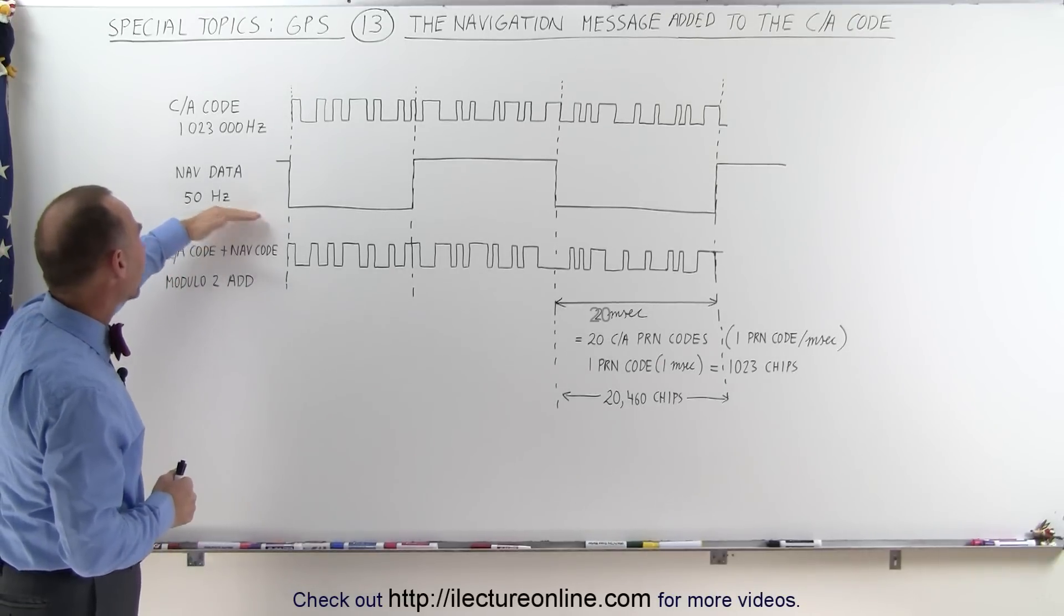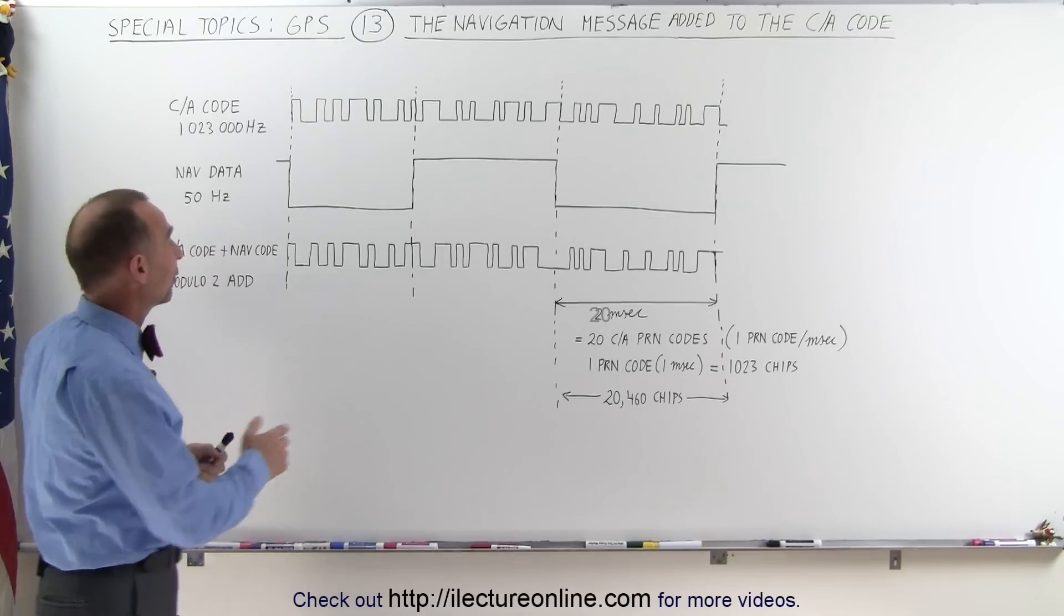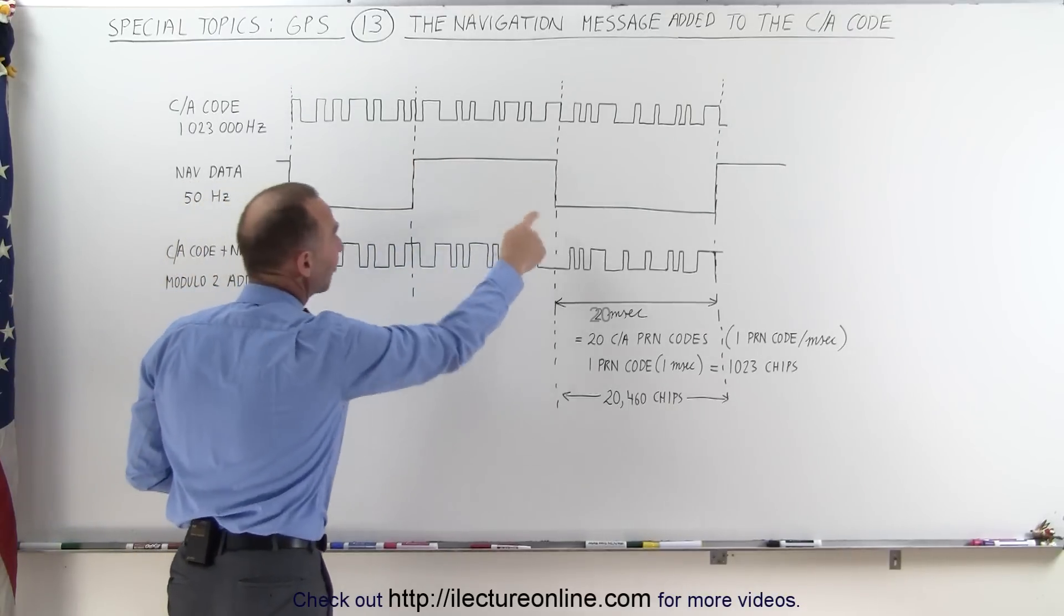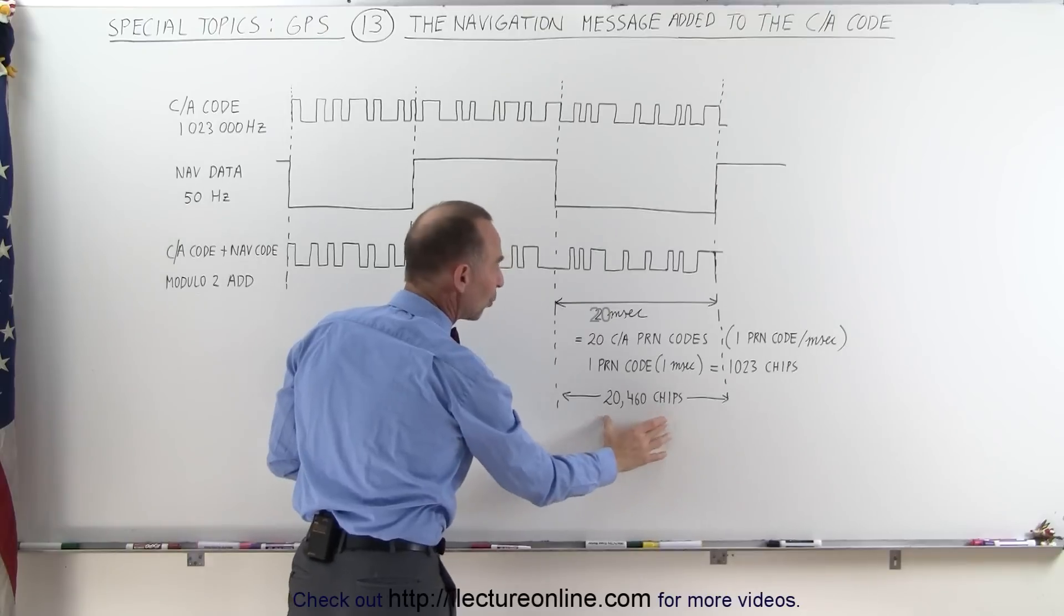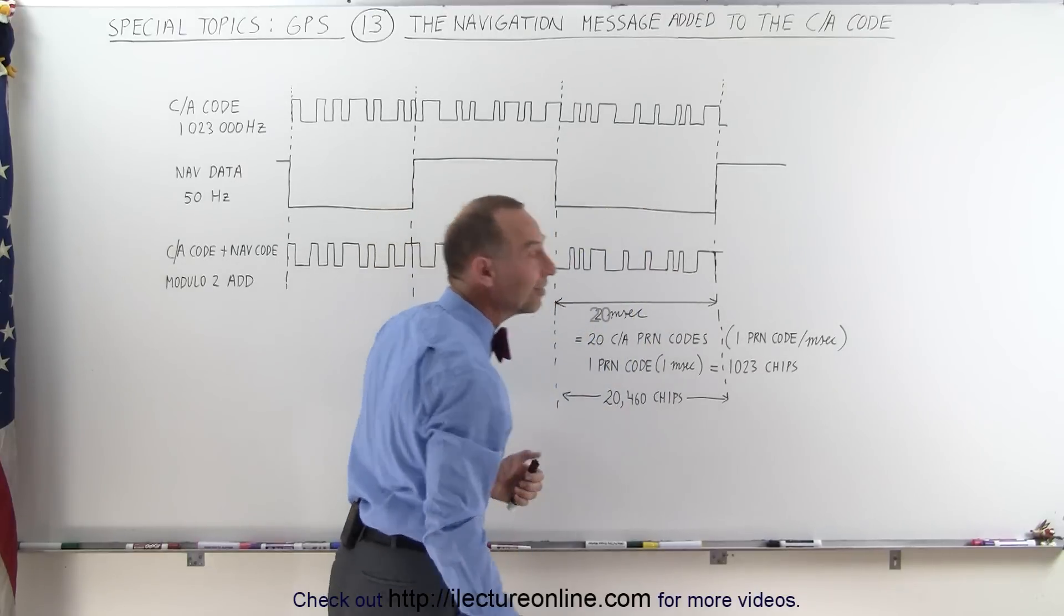We then add to that the NAV data. The NAV data runs at 50 hertz, which means that for every 1 bit on the NAV data, we have a total of 20,460 chips of the PRN code in the CA code.